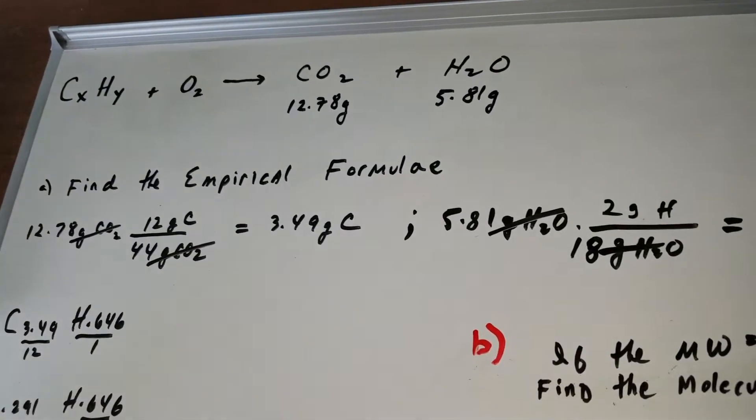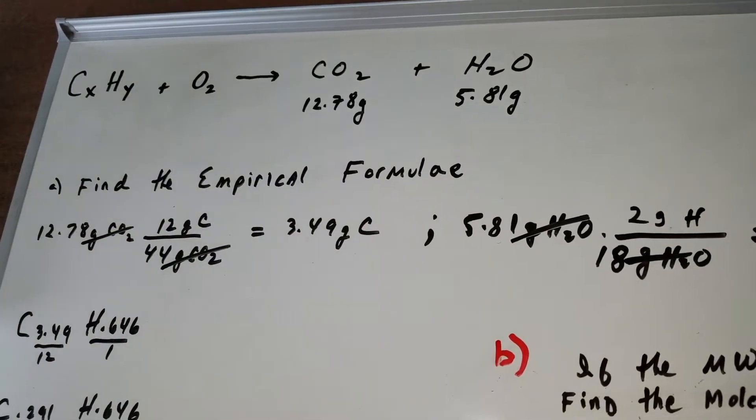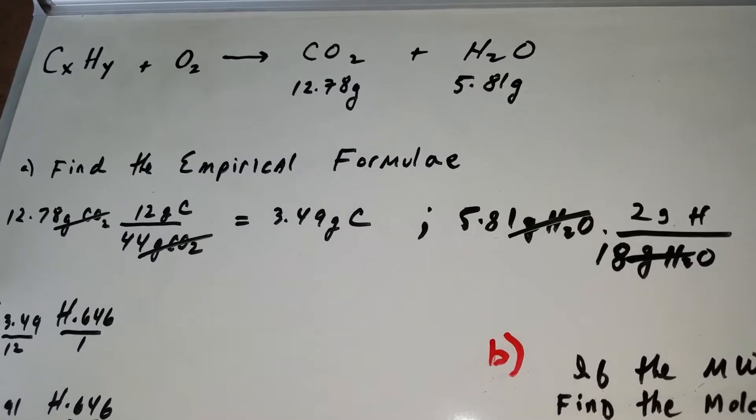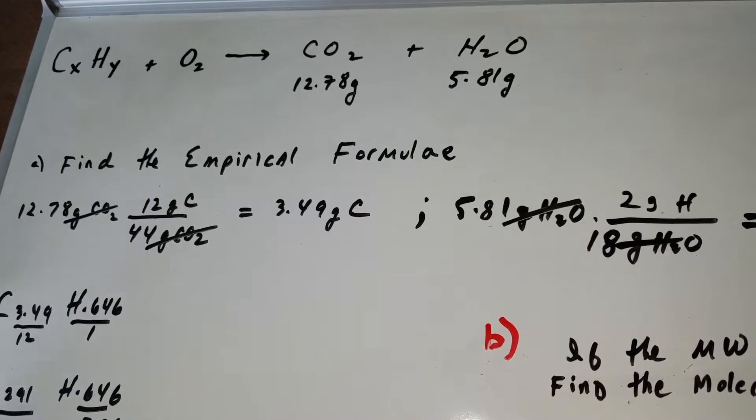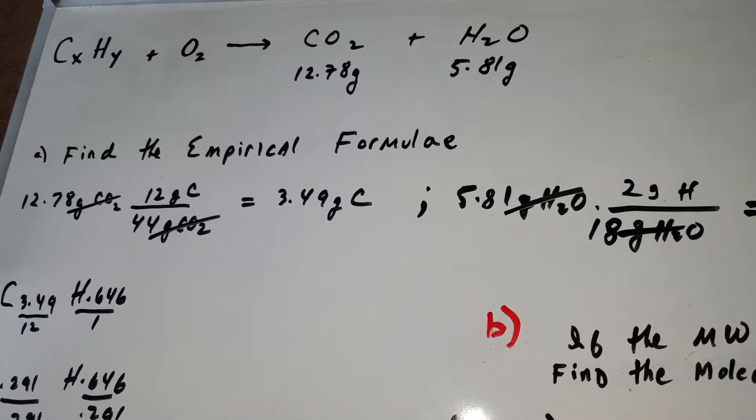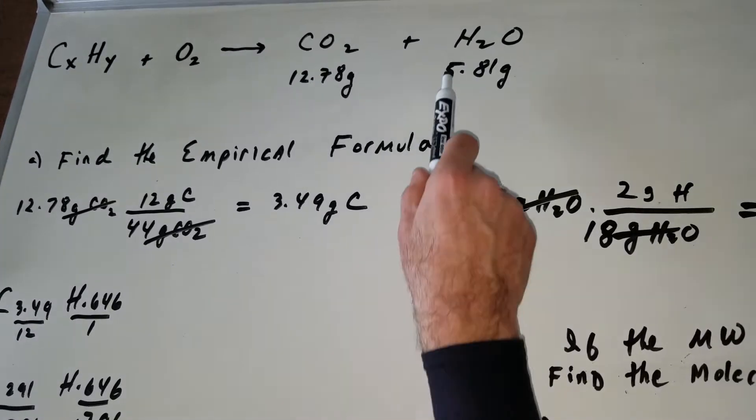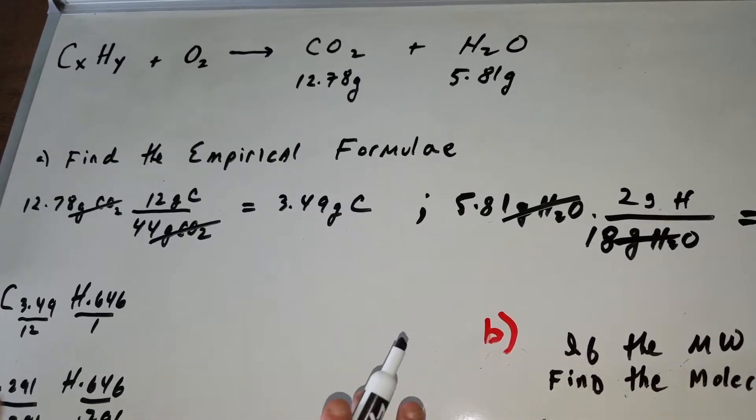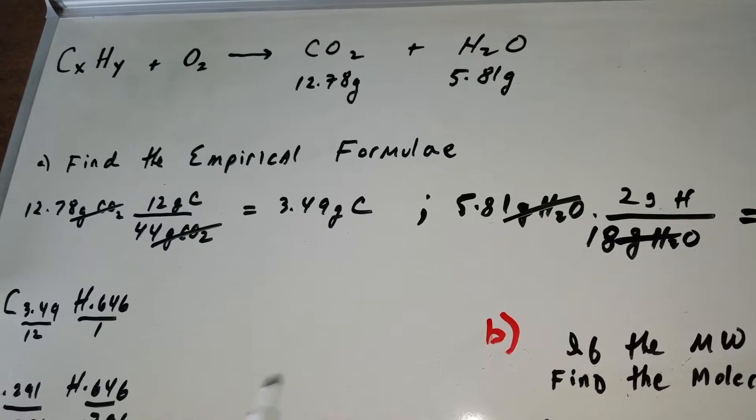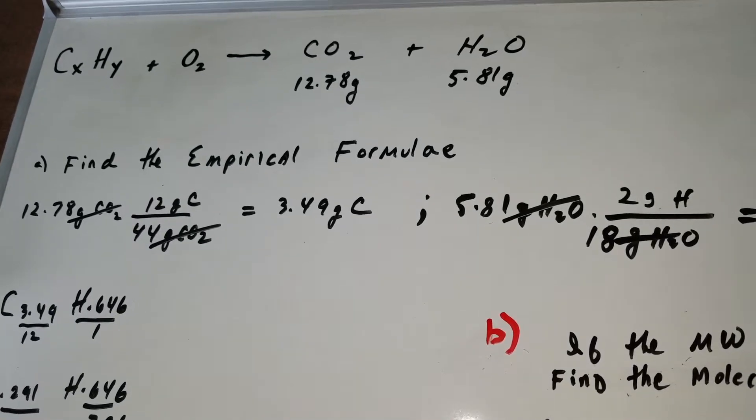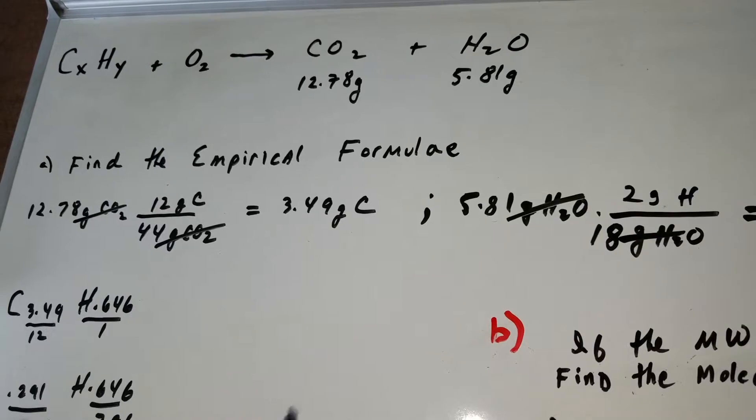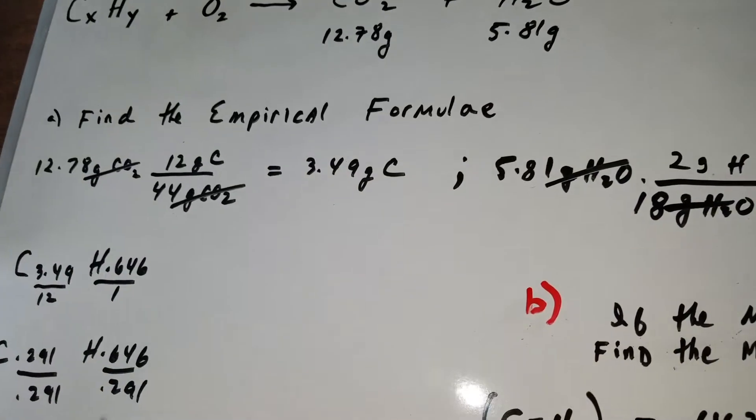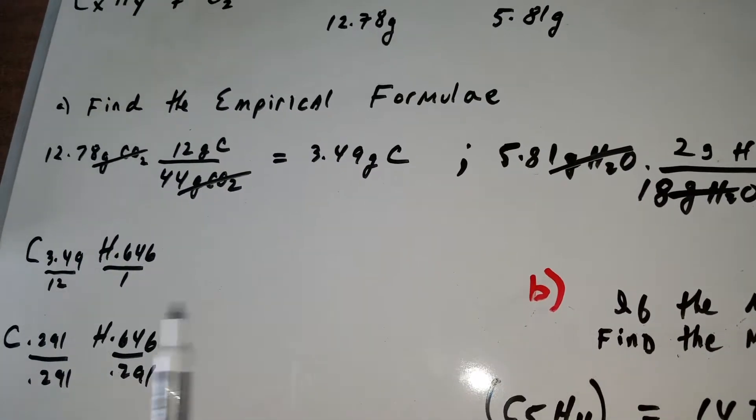Now, what we want to do in this problem is look at what we call a combustion reaction. We're going to take a hydrocarbon and make it undergo combustion to CO2 and water. We analyze the amount of CO2 as 12.78 grams and water is 5.81 grams. Don't worry about the numbers not being nice. On the DAT exam and in the destroyer, all the numbers are nice. All I care about is you understanding how I approach this problem. What I want to do is find the empirical formula of the compound.